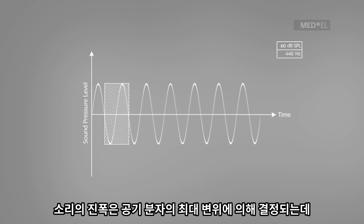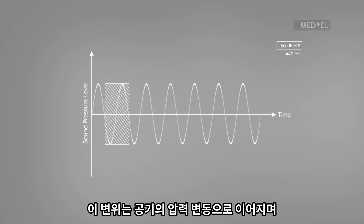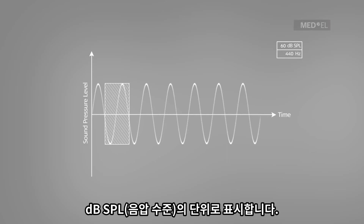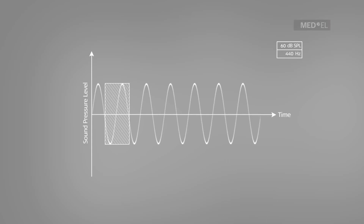The amplitude of a sound is determined by the maximum displacement of air molecules. This displacement leads to pressure fluctuations in the air, which are expressed in units called decibel sound pressure level.